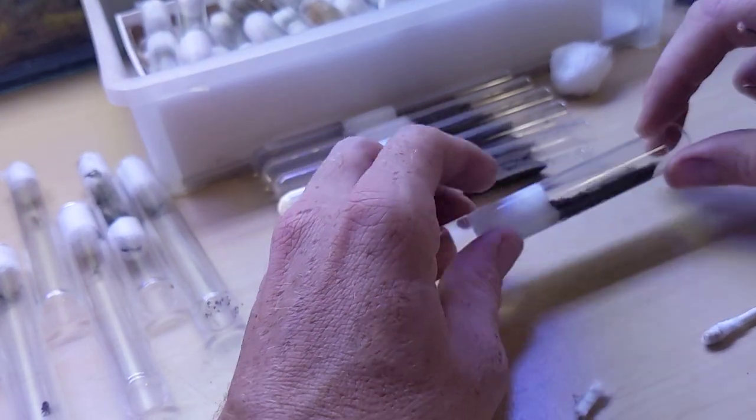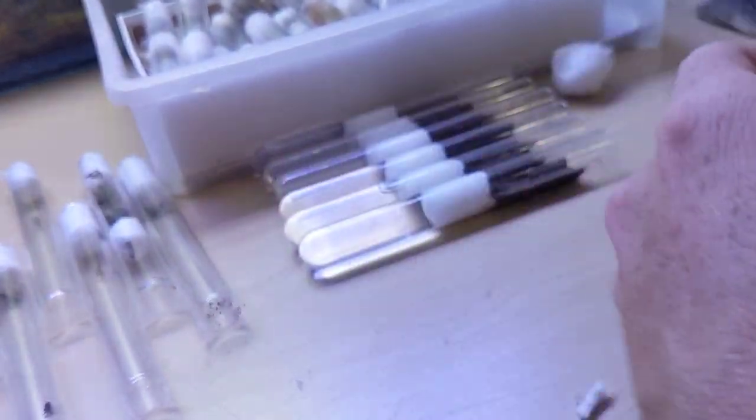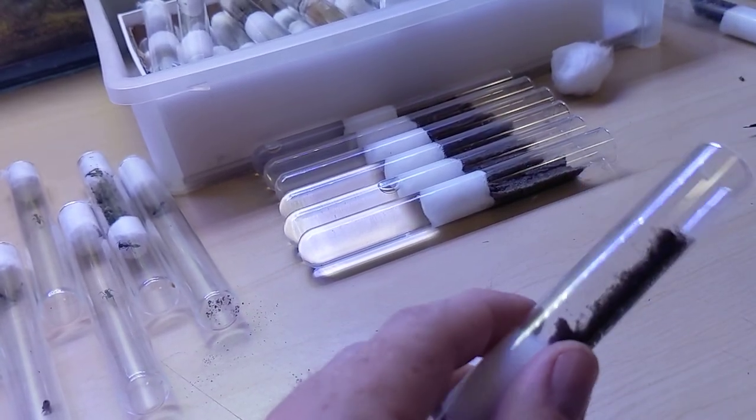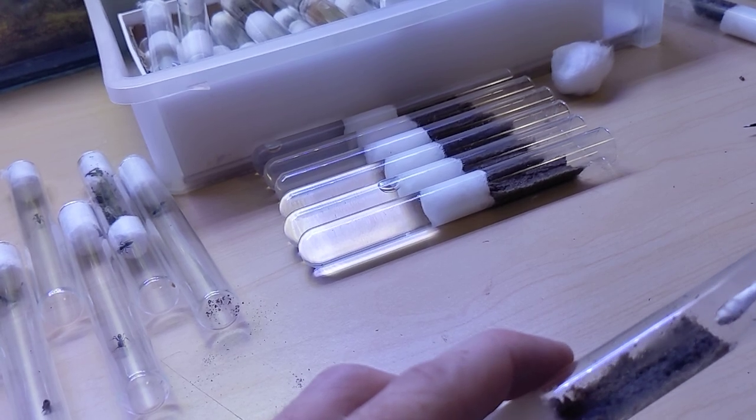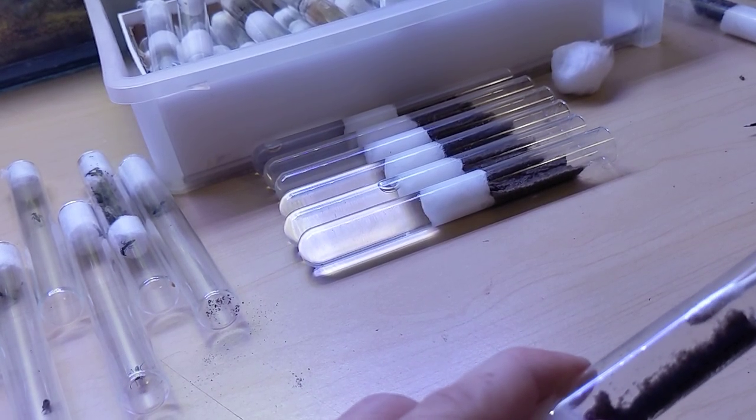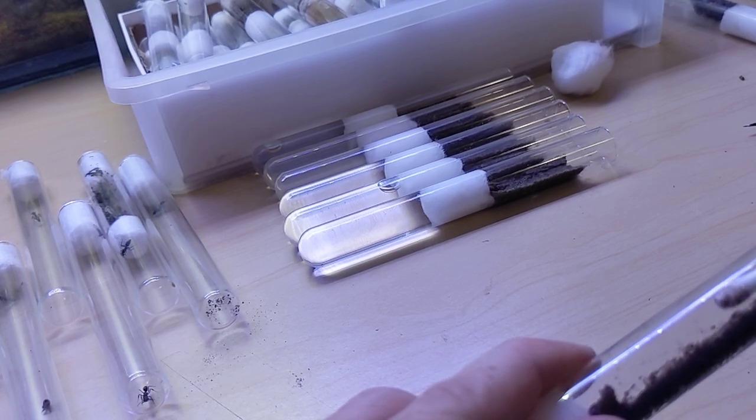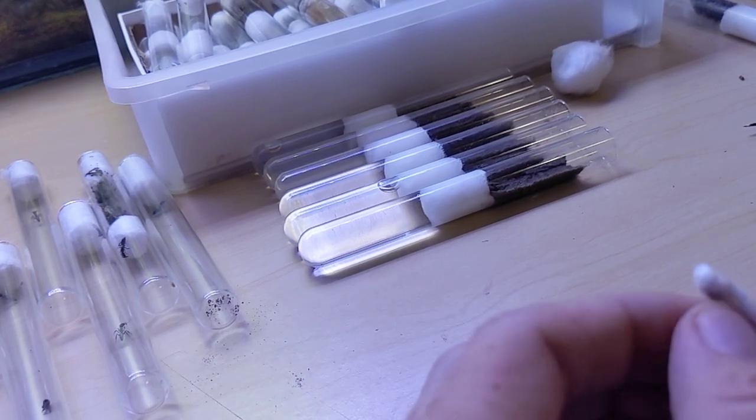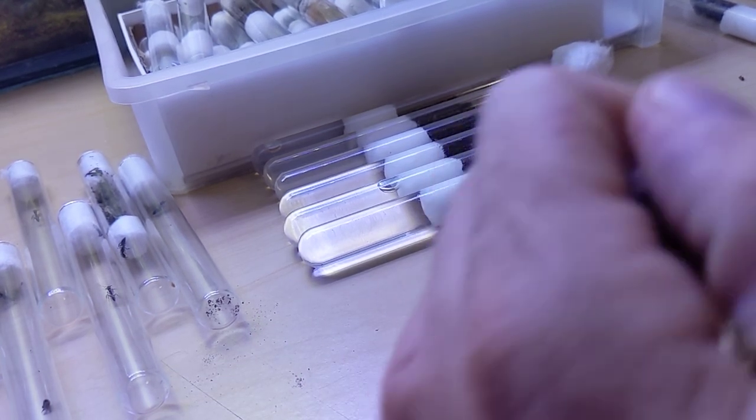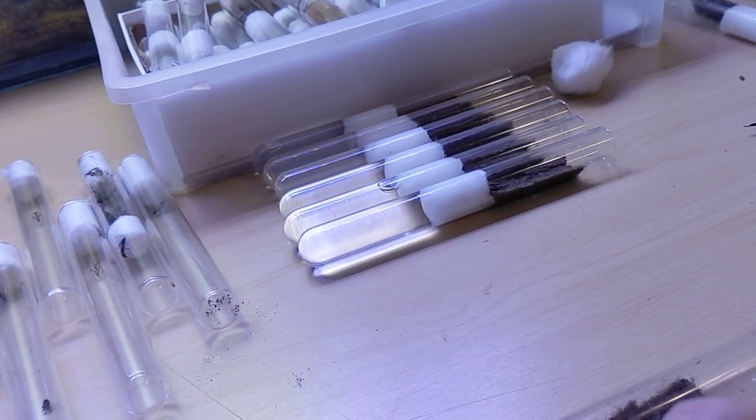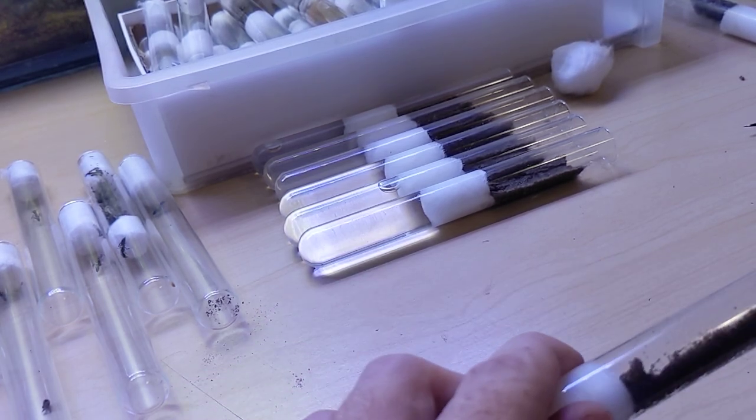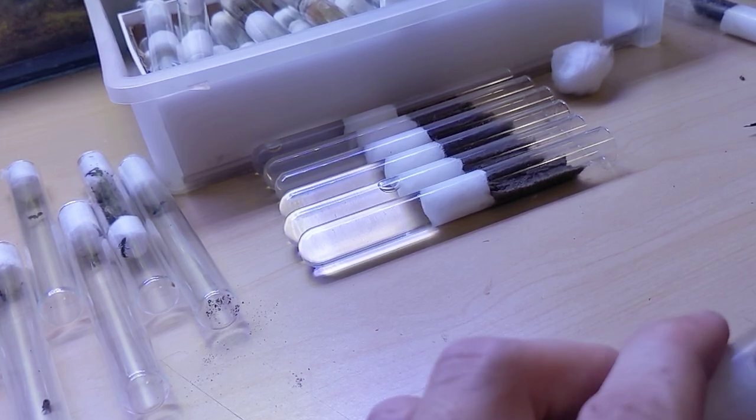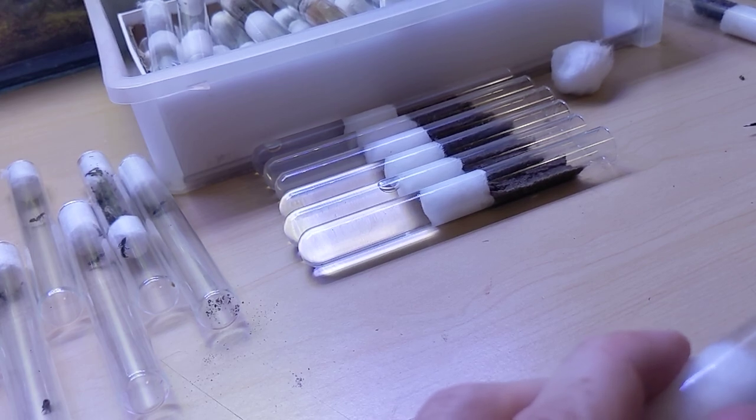The larvae need substrate in order to pupate. So while they're spinning their cocoon, the workers will even place pieces of substrate on them. I suspect they use it as kind of a scaffolding for their silk. But regardless, without access to this substrate, they won't successfully pupate and they will die or be eaten by the workers or other larvae.